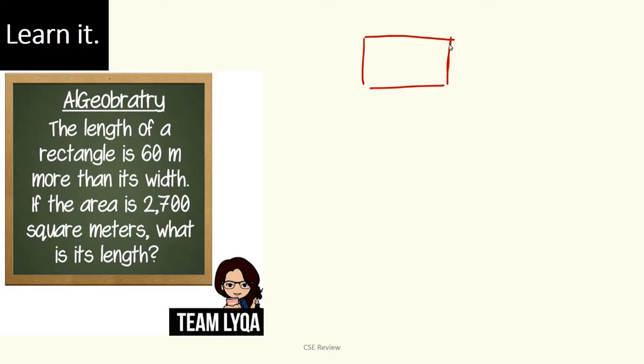If we have a rectangle, this is the length, the bigger side. It's 60 meters more than its width. If it's 60 meters more, it means that in Tagalog, it's 60 meters more than width. So this is plus. It means that if it's width, its length is 60 plus the width. The area of the rectangle is 2,700 meters.